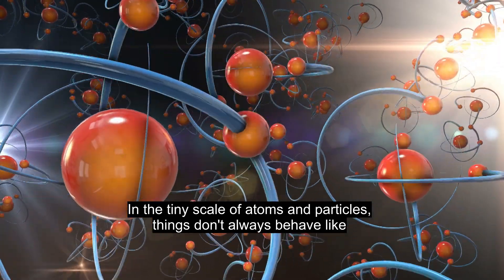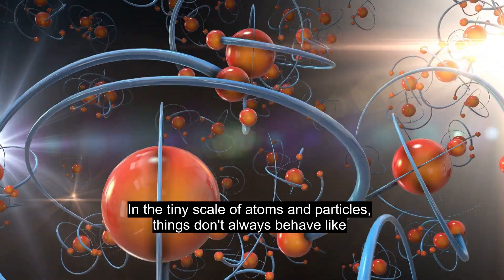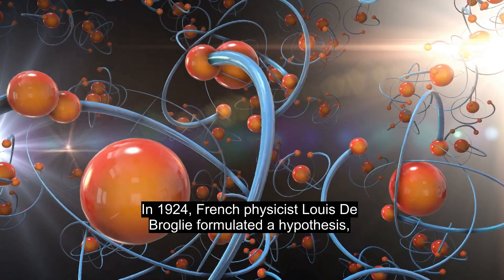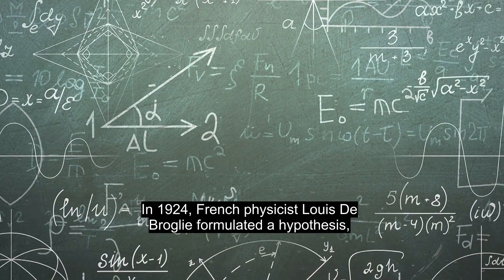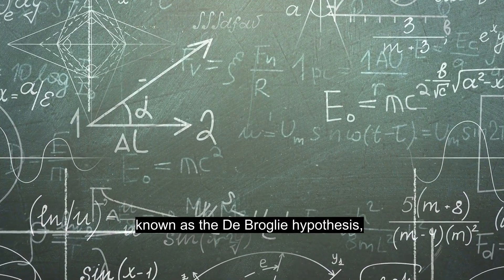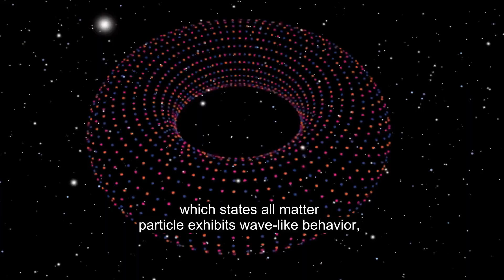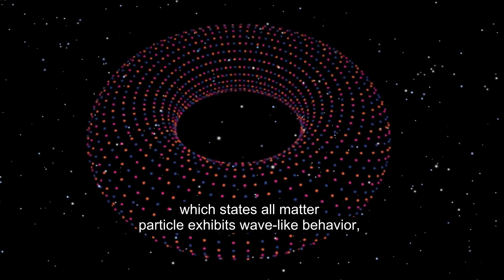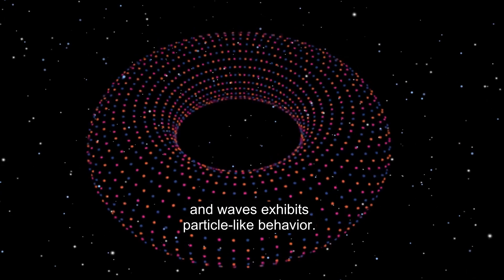In the tiny scale of atoms and particles, things don't always behave like we expect them to. In 1924, French physicist Louis de Broglie formulated a hypothesis, known as the de Broglie hypothesis, which states all matter particles exhibit wave-like behavior, and waves exhibit particle-like behavior.